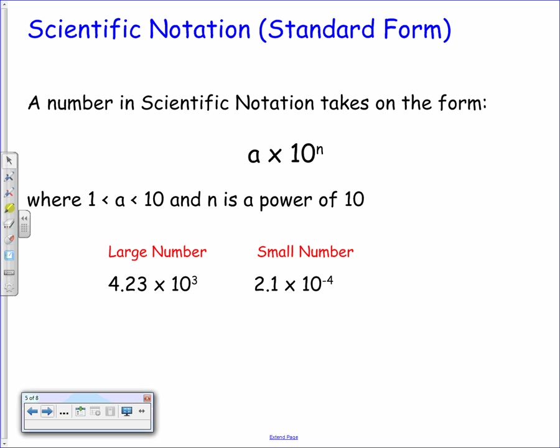A large number will take on the form 4.23 × 10^3, with a positive power. A small number looks something like 2.1 × 10^-4, with a negative power. So the power tells you whether it is a large or a small number.